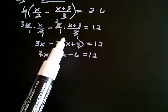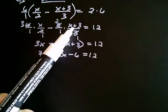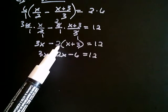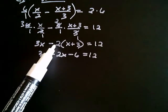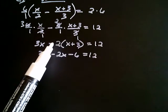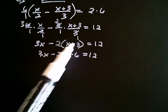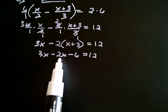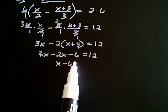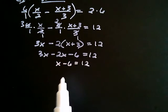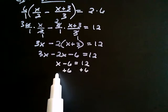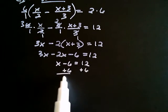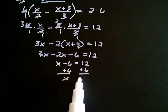So that's why you have to be careful when you have a sum here, because what happens is you end up distributing whatever you have here. It doesn't just get multiplied by the first term, it gets multiplied by both of them. Now 3x minus 2x is x, minus 6 equals 12. So now I want to add 6 to both sides. And I get, on the left-hand side I get just x, and on the right-hand side I get 18. So x is equal to 18, and that would be my answer.